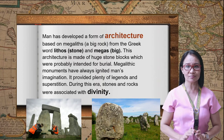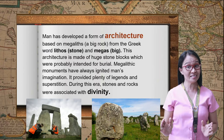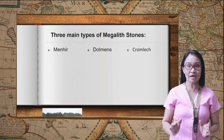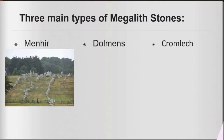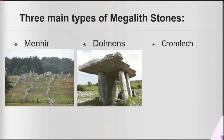During this era, stones and rocks were associated with divinity. There are three main types of megalith stones. First, the menhir — a huge stone standing vertically on the ground, usually standing in the middle of a field or arranged in rows. Second, dolmens — the word dolmen originated from the expression meaning 'stone table.' These structures consist of two huge standing stones supporting a horizontal giant stone, believed to have served as a grave or an altar.